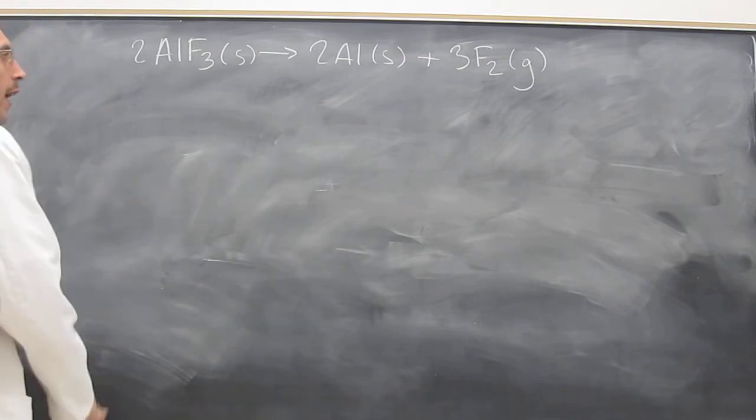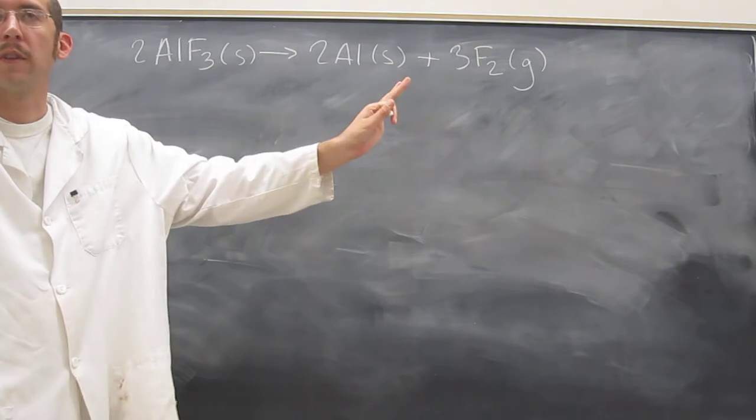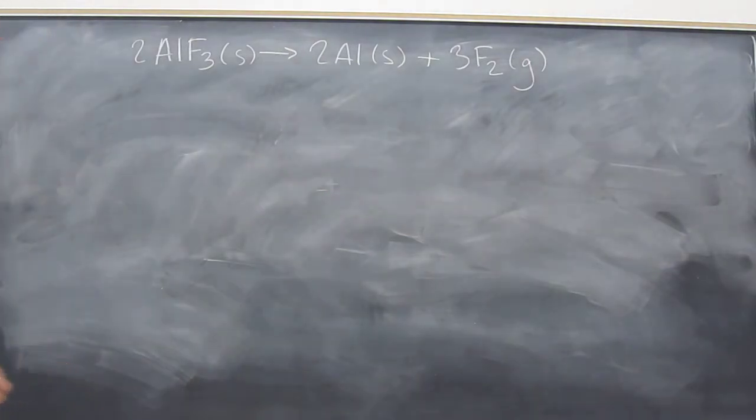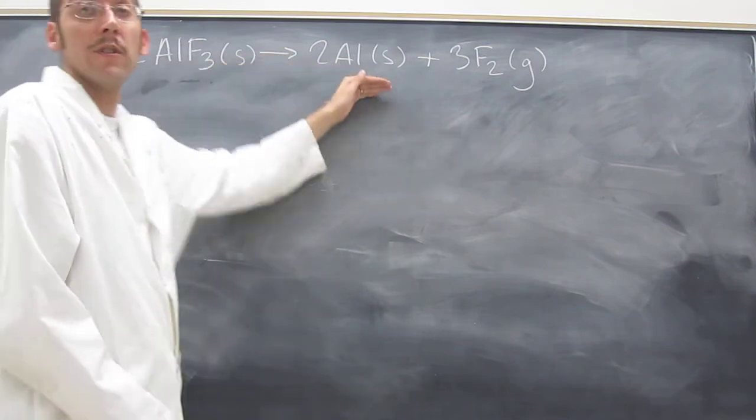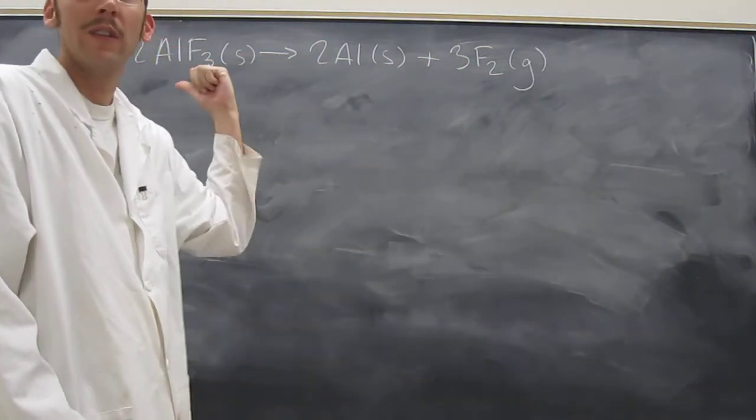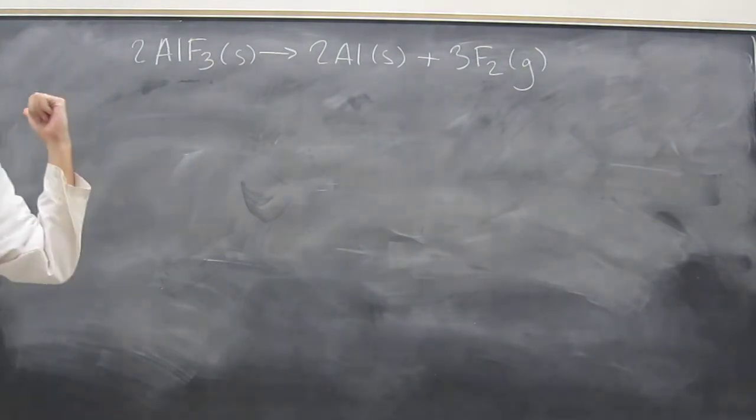So that's how you figure out what the oxidation numbers of these things are. So aluminum fluoride has different oxidation numbers than aluminum and fluorine. So yes, the oxidation numbers change, so it's a redox reaction. That's how you know. If the oxidation numbers change, it's a redox reaction.